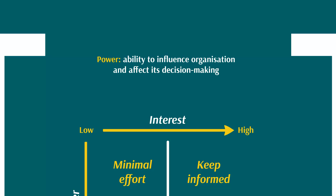Stakeholder power is the ability of a stakeholder to influence an organization and affect its decision-making. For example, the CEO has high power because they help shape strategy and affect decision-making, whereas a part-time employee wouldn't have much power because they wouldn't have much responsibility to change or affect the strategies or decision-making of an organization.